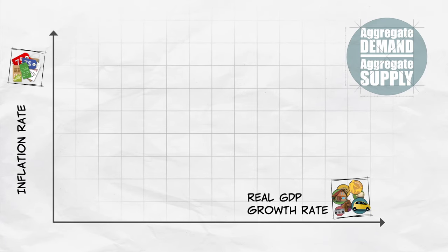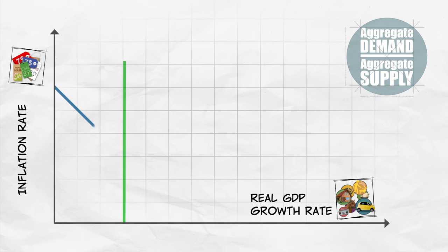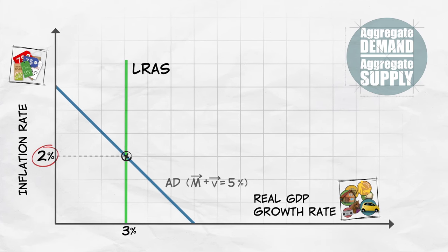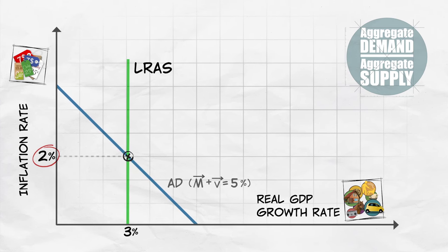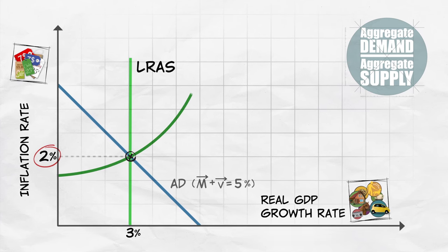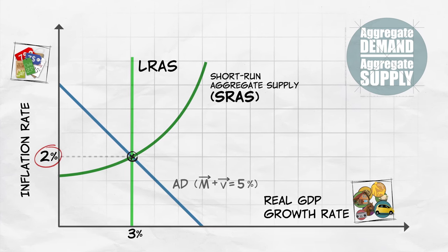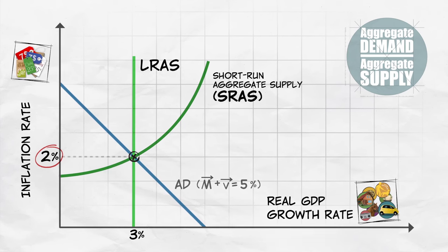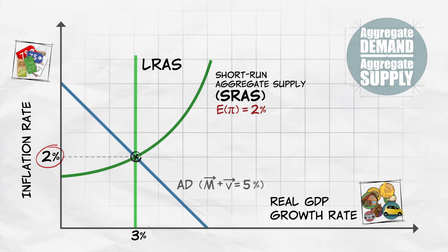How do we model this? To capture these ideas, we're going to introduce into our diagram the short run aggregate supply curve. There are two supply curves. In the initial equilibrium, the inflation rate is 2%, and suppliers expect the inflation rate to be 2%, which we note on the short run aggregate supply curve as E-inflation, or E-pi — short for the expected inflation rate — equal to 2%. Now let's see how an increase in aggregate demand, brought about by a faster growth rate in the money supply, works its way through the economy.